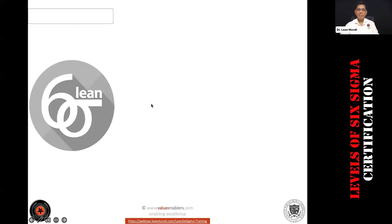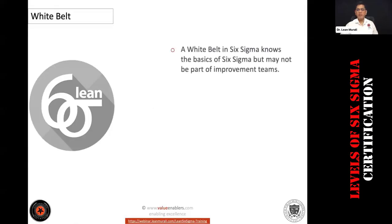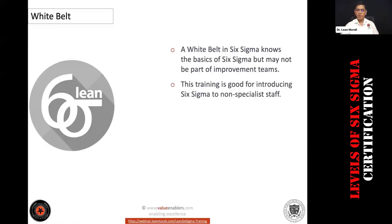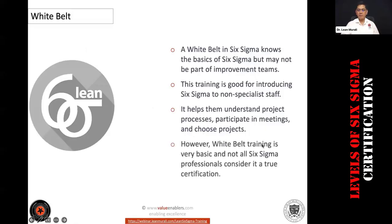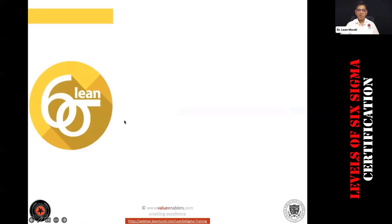Going deeper on each belt: White Belt is the basic Six Sigma level, but they are not part of improvement teams. This training is good for non-specialist staff to give an overview of the methodology and help them understand what improvement teams are doing. White Belt training is very basic, and not all Six Sigma professionals consider it a true certification.